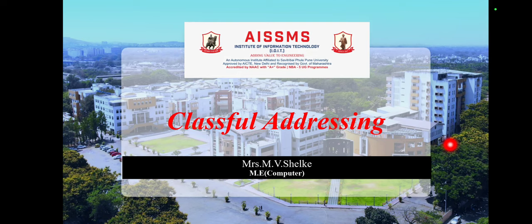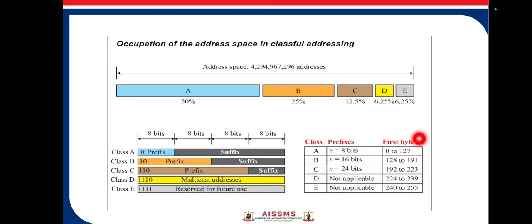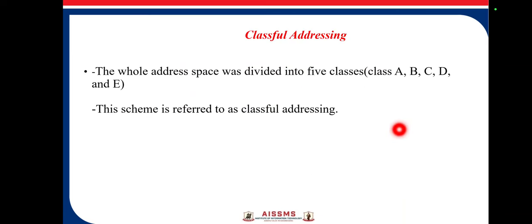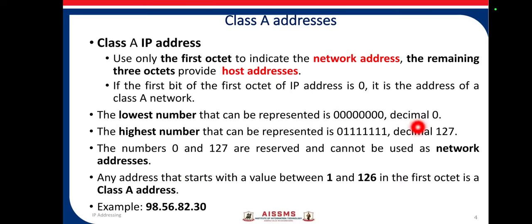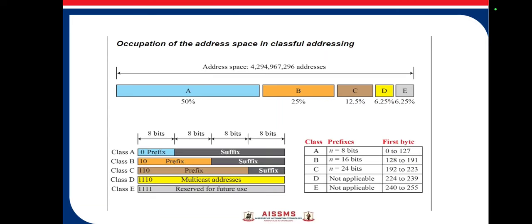Hello everyone, today I will explain the concept of classful addressing. Every machine requires a unique IP address, and the whole address space is divided into five classes: class A, B, C, D, and E. That scheme is referred to as classful addressing. Now if you observe the diagram for the address space in classful addressing...